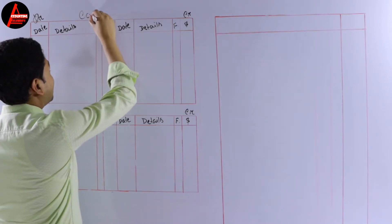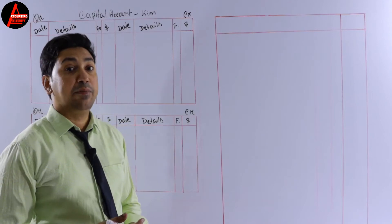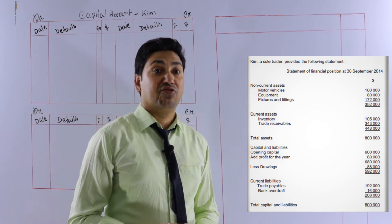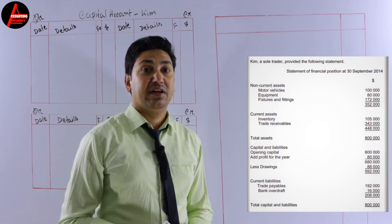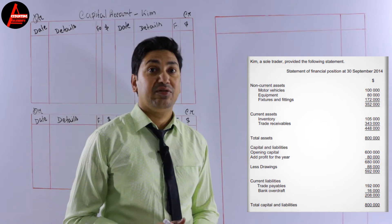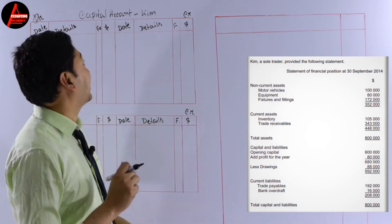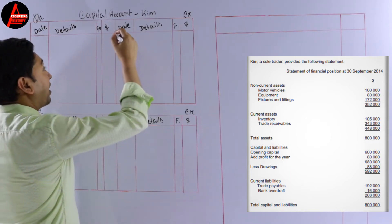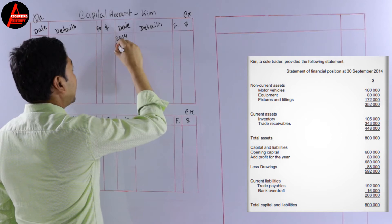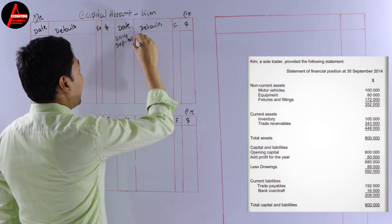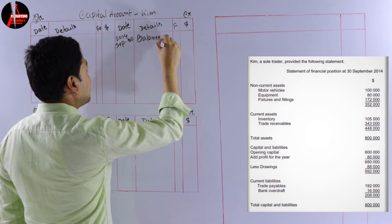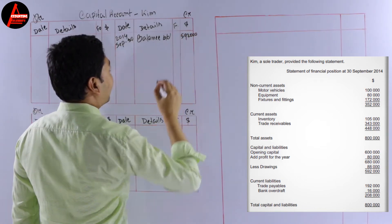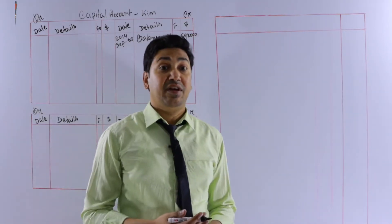The first one is for Kim. So let us write the capital account. Looking at the liabilities, the opening balance was 600,000 dollars, then profit of 80,000 dollars is added, and drawings of 88,000 dollars are subtracted. The net capital is 592,000 dollars. This is the balance Kim already has, so we write: 30 September 2014 — balance brought down — 592,000 dollars.